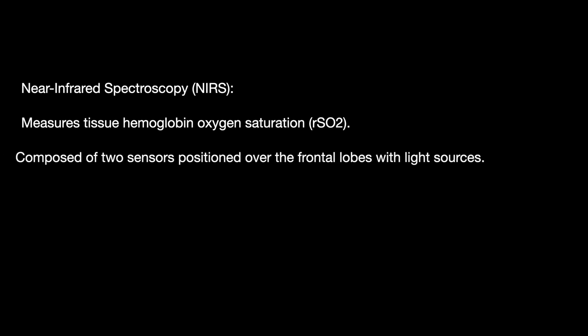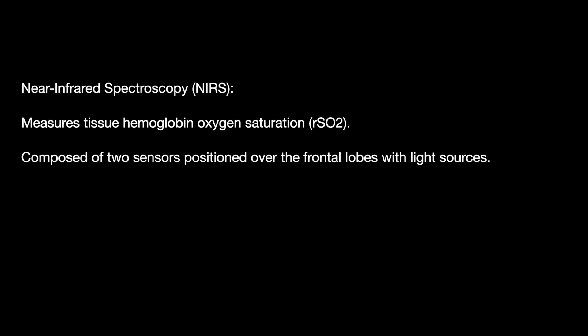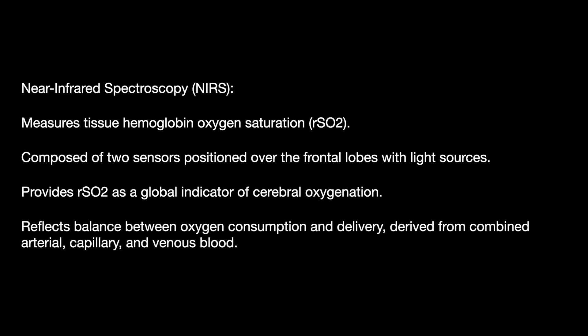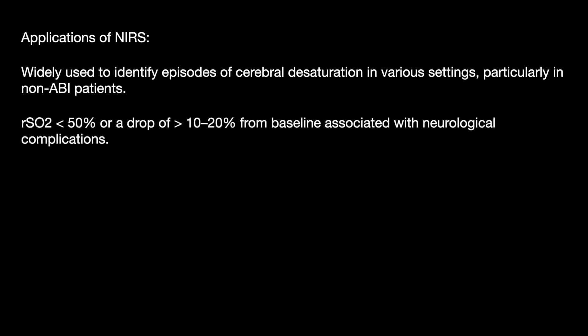Finally, the fifth monitor is brain oxygenation. We use near-infrared spectroscopy, or NIRS, which measures tissue hemoglobin oxygen saturation. It is composed of two sensors positioned over the frontal lobes with light sources, providing saturation as a global indicator of cerebral oxygenation. It reflects the balance between oxygen consumption and delivery derived from combined arterial, capillary, and venous blood. It is widely used to identify episodes of cerebral desaturation; a saturation less than 50% or a drop of more than 10–20% from baseline is associated with neurological complications.